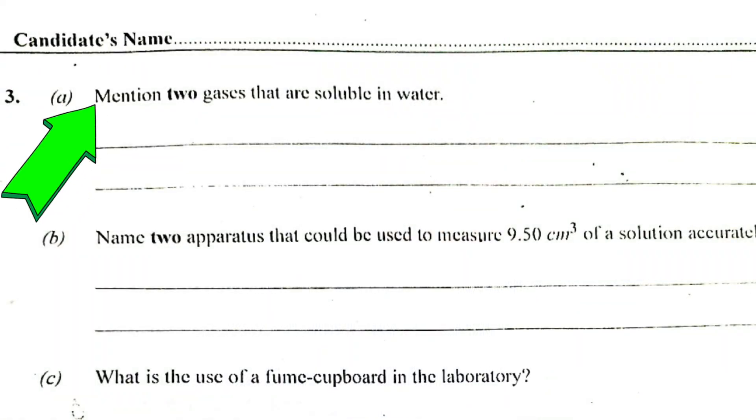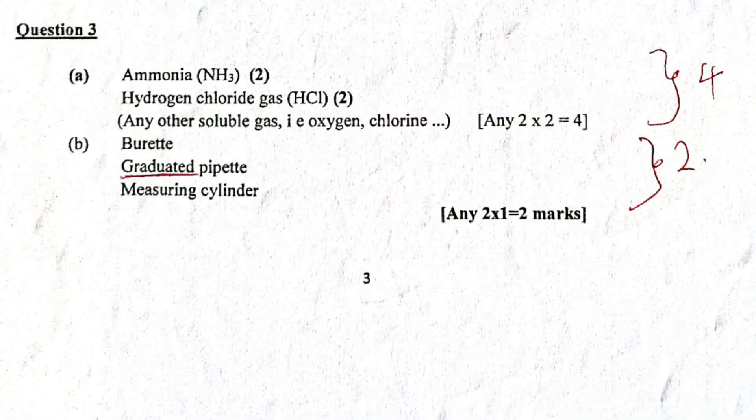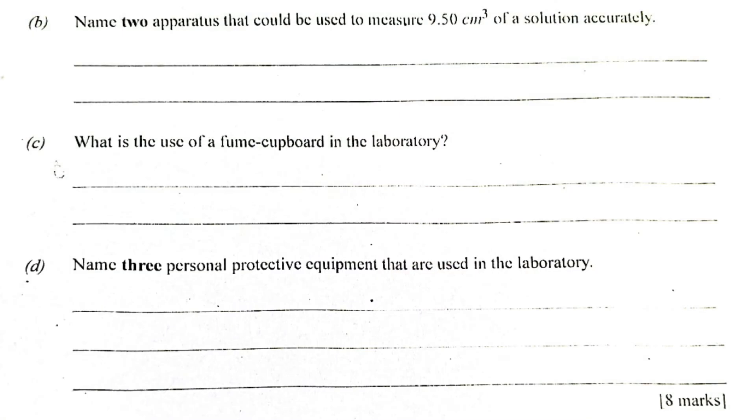So from there, let's go to number 3. The number 3 question is there. 3A. Mention 2 gases that are soluble in water. There are a lot of gases that you can mention that are soluble in water. From the marking guide there, we have, if you mention ammonia, you have to score 2 marks. For any correct answer given. You have to give 2 answers. So 2 times 2 marks there. If you mention hydrogen chloride gas. That's 2 marks. Any other soluble gases like oxygen, chlorine, NO2, and other gases that are soluble will be marked. So maximum of 4 marks for that part A over there.